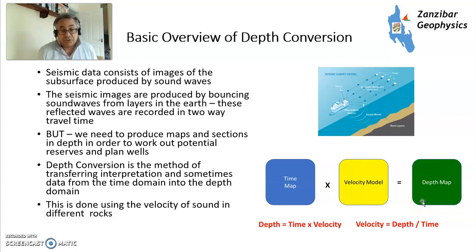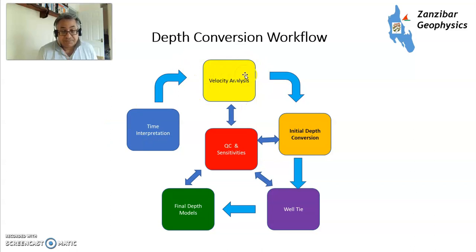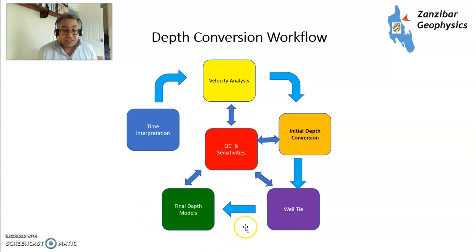We need to have a velocity model, and there are various different types. The conversion technique works like this: you have a time domain interpretation, you analyze your velocities, you then do an initial depth conversion, tie that to any existing wells to make sure everything fits, perform various QCs and sensitivities, and at the end you get a final depth domain model which you can use to calculate your reserves and estimate your chance of success.